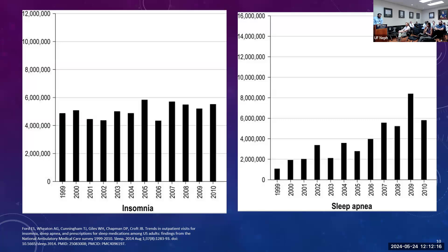A study examined national trends in outpatient settings for sleep-related difficulties and prescriptions for sleep medications, using data from the National Ambulatory Medical Care Survey from 1999 to 2010 for people ages 20 and older. The number of office visits for insomnia went from about 4.9 million in 1999, fluctuating but exceeding five million by 2010. The number of reported visits for sleep apnea rose from close to 1.1 million in 1999 to close to 8.4 million by 2009.